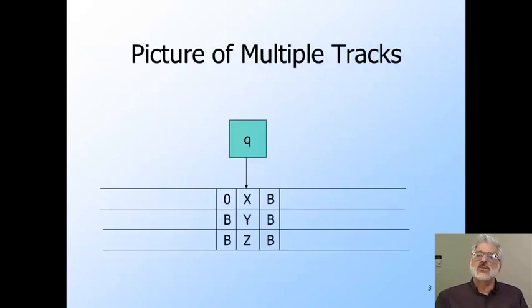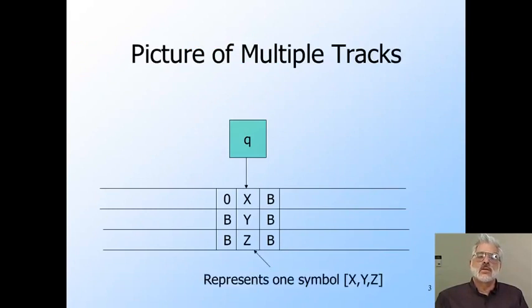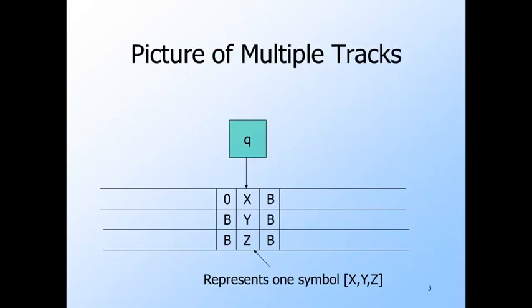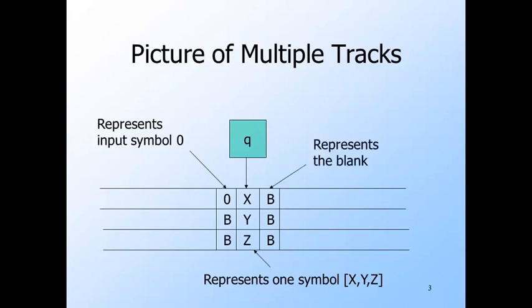Here's how we can visualize a Turing machine with three tracks. A tape symbol is viewed as the vector x, y, z, but it is really just one tape symbol. Suppose the input is written on track one. The input symbol zero must be thought of as the vector (zero, blank, blank), and the blank symbol is thought of as the vector (blank, blank, blank).